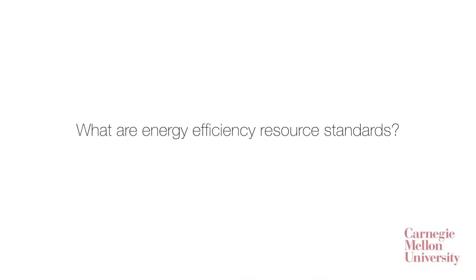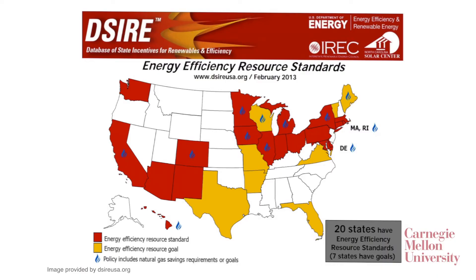And why is looking at rebound effects important? Because if we do not account for rebound effects, we may be overstating the potential impact from energy efficiency measures, and that may have consequences for policy design. This makes it challenging to determine whether states are meeting their energy efficiency resource standards. Energy efficiency resource standards require utilities to reduce energy consumption through energy efficiency programs. 20 states have these standards and seven other states have similar goals, reaching overall 100 million customers.